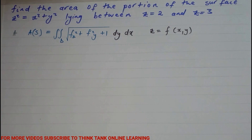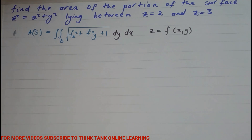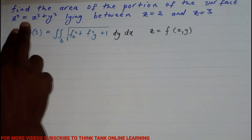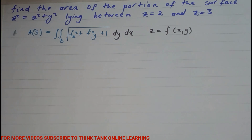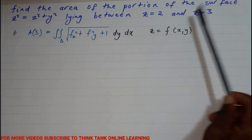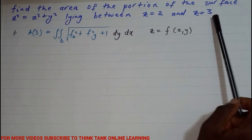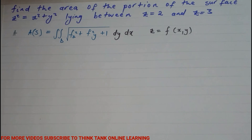Welcome back to Think Technology Learning. In this video we're going to talk about areas of surfaces in space. We're given a problem: find the area of a portion of the surface z² = x² + y², lying between the plane z = 2 and z = 3.